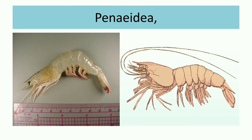In Penaeidae, mostly penaeid shrimps are included. This section consists of commercially important marine species, with shrimps belonging to the family Penaeidae.